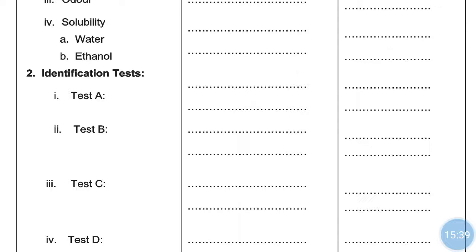The one remaining experiment is the assay by Volhard's method — the assay of ammonium chloride by Volhard's method — which we will study in the next class. In the last class we had seen the assay of sodium chloride by Mohr's method. Thank you so much for watching this video. Happy learning. Stay safe.